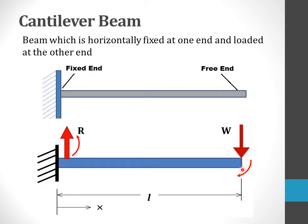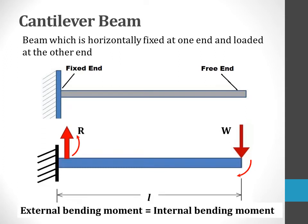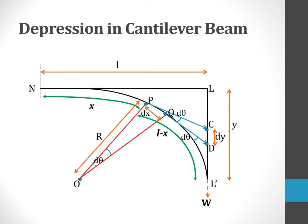Therefore, this external bending couple must be balanced by another equal and opposite couple created due to the elastic nature of the body, called the internal bending moment. Under equilibrium conditions, the external bending moment must be equal to the internal bending moment. Let us now proceed to determine the depression which the cantilever beam undergoes when it is loaded at its free end.